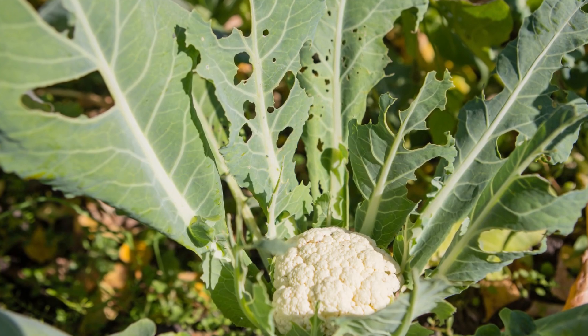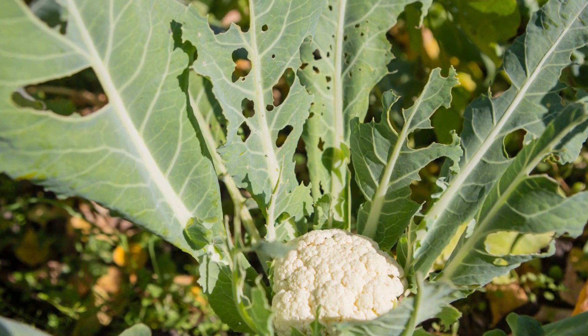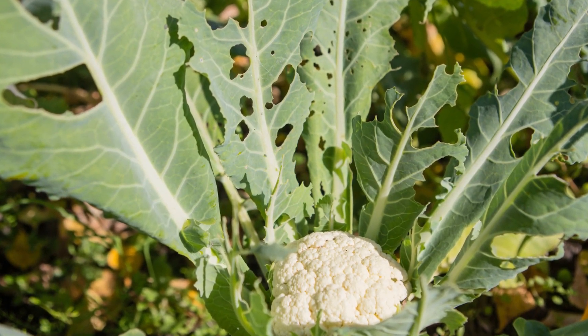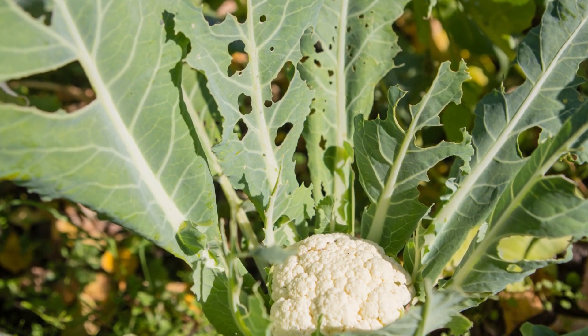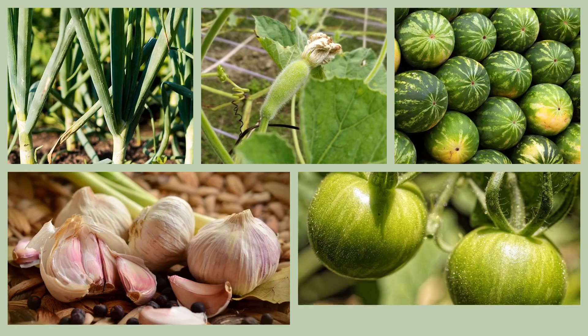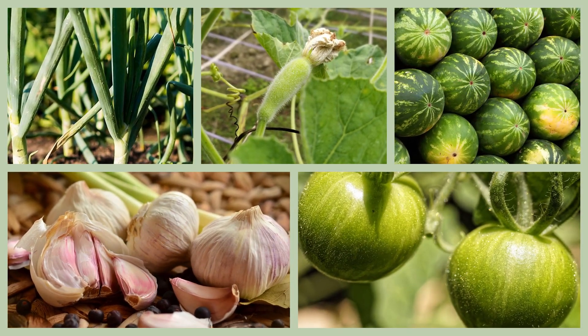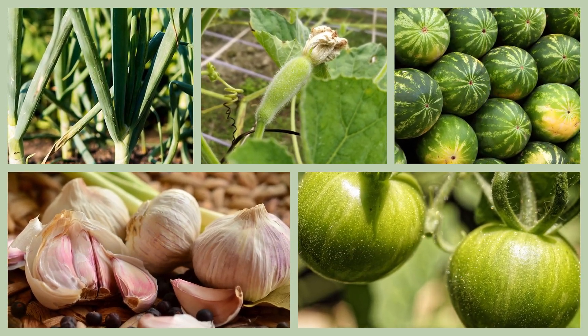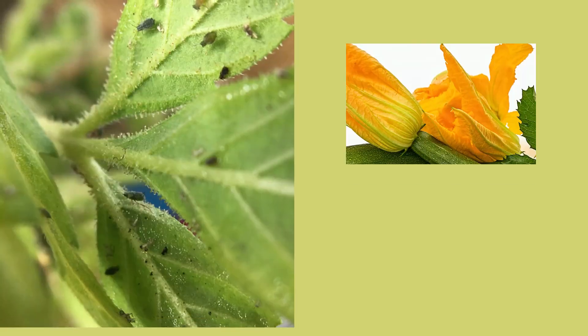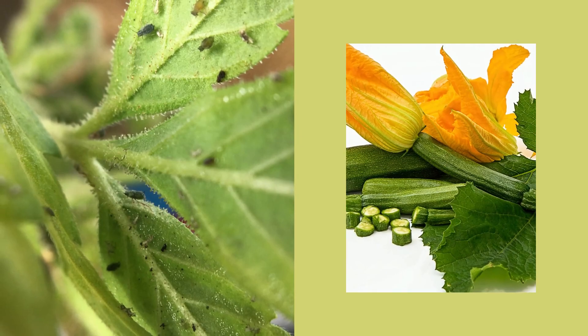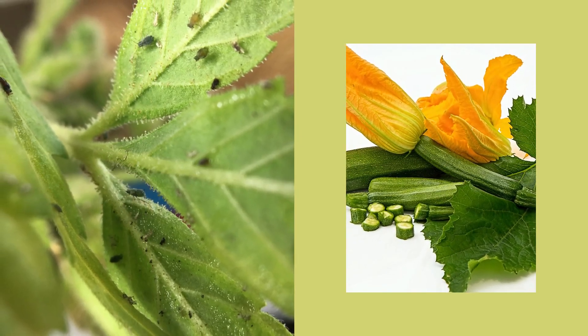Vegetables: thrips are common pests of vegetable crops such as onions, garlic, peppers, tomatoes, and cucurbits including melons, cucumbers, and squash.